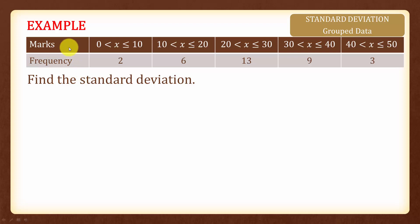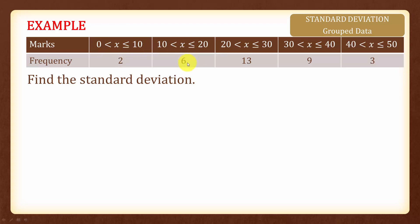Here we have an example showing grouped data. For marks between 0 and 10, we have a frequency of 2. For marks between 10 and 20, we have a frequency of 6, and so on. We are asked to find the standard deviation.